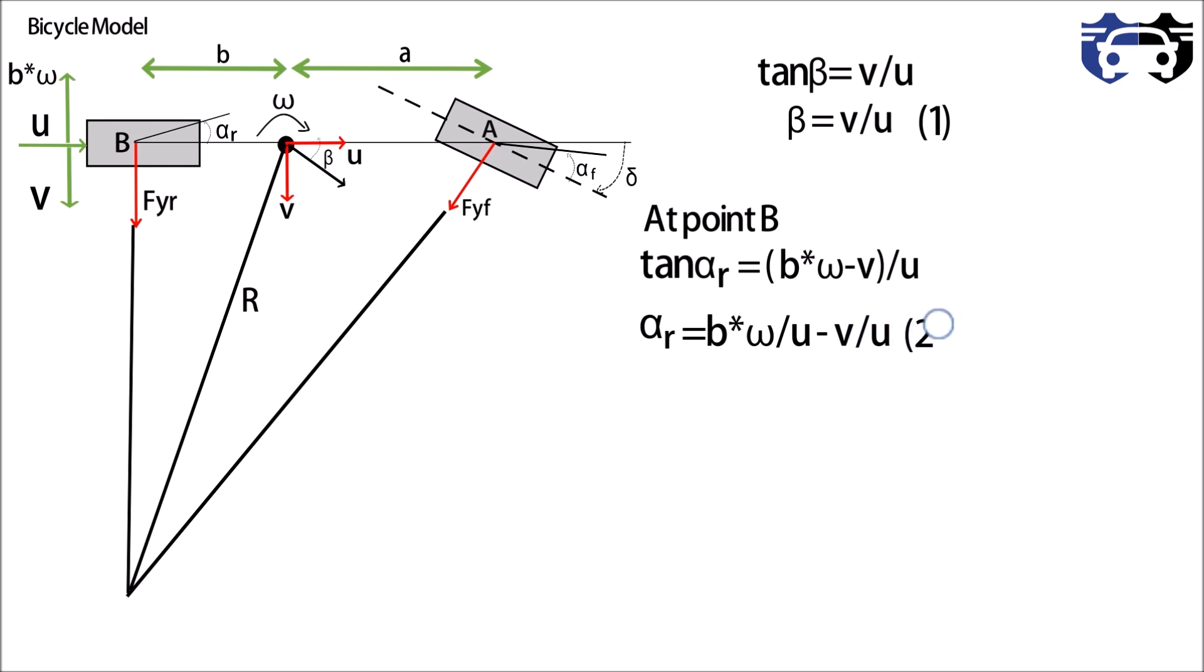Now at the CG we can write u equals to R into omega. This is our equation three. Now on putting equation three and one in equation number two, we get alpha_r equals to beta minus b by R. This is the simple iteration.